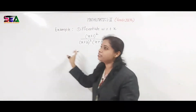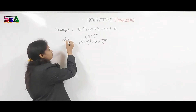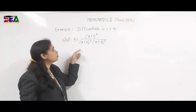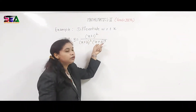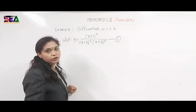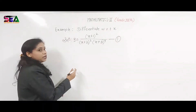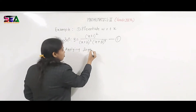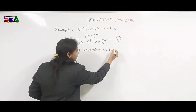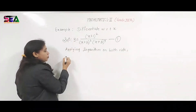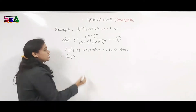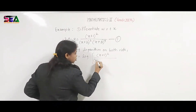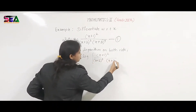How do we solve this using our steps? Step 1: assume the given function as y. So y = (x+1)² / [(x+2)³ · (x+3)⁴], and take this as equation 1. Our next step is applying logarithm on both sides. The LHS becomes log y, and the RHS is the logarithm of the complete function (x+1)² divided by (x+2)³ into (x+3)⁴.